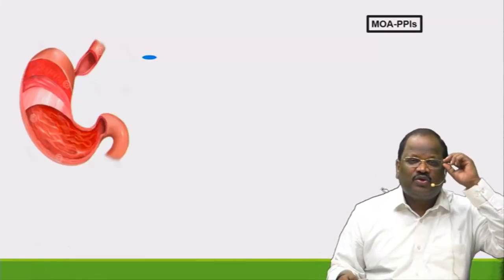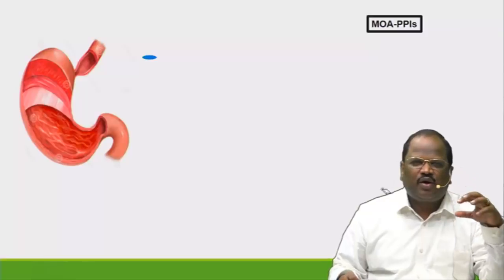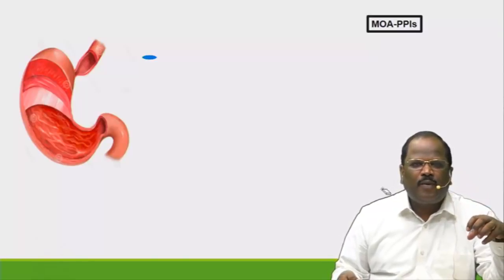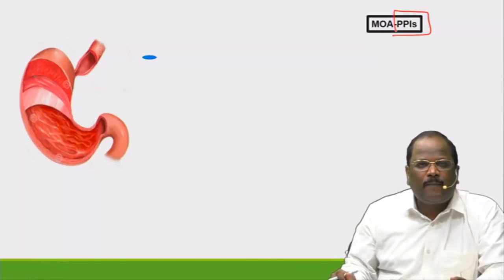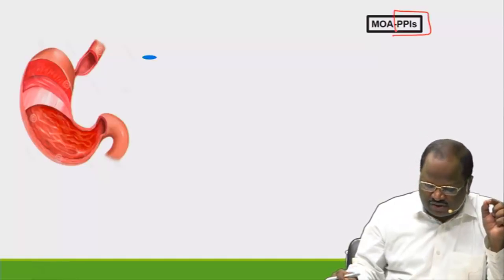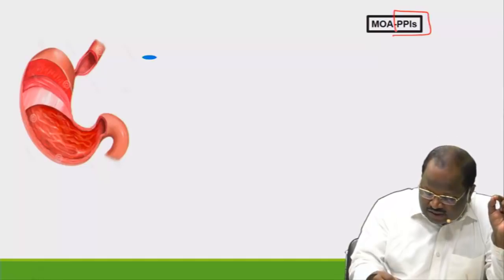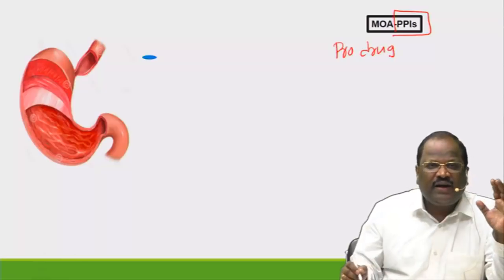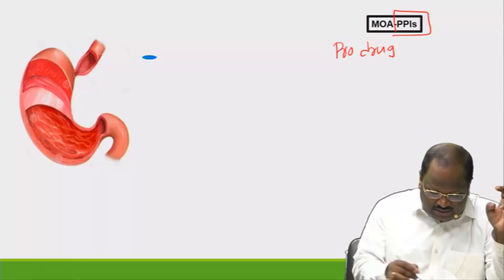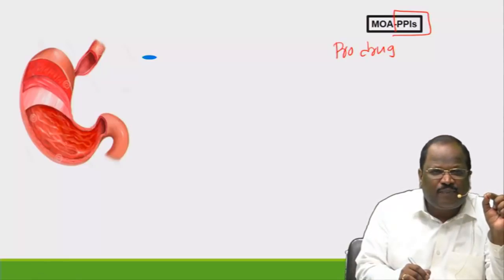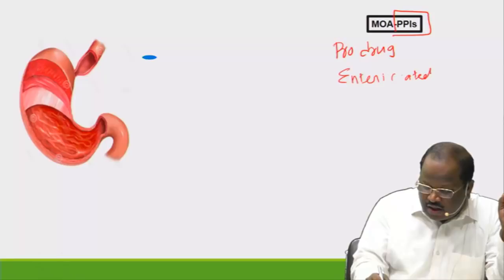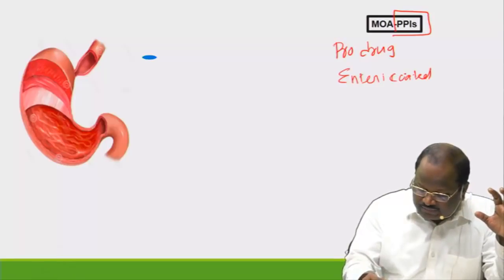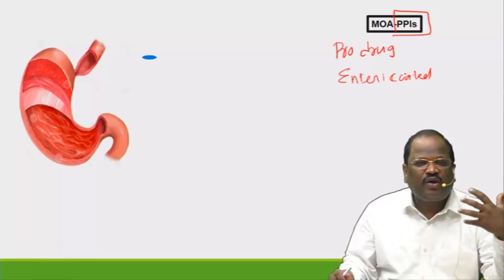Today we are going to discuss the drug of the week: proton pump inhibitors — a very important area for MCQs. First MCQ point: all proton pump inhibitors are prodrugs. Second point: proton pump inhibitors are destroyed in acidic medium, so they are given in enteric coated form.